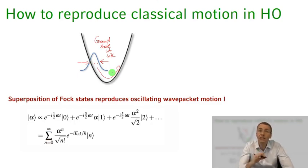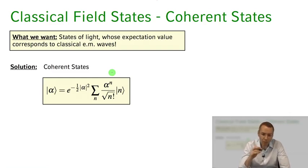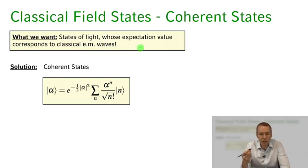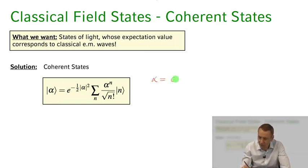Coherent states cannot eliminate these quantum fluctuations — they are our best approximation to classical oscillations in the quantum world, and that's why we like them so much. For the electromagnetic field, we want states of light that reproduce, as their expectation value, the classical electromagnetic waves from Maxwell's equations. These are the coherent states, written as |α⟩, where α is a complex number called the amplitude of the coherent state.